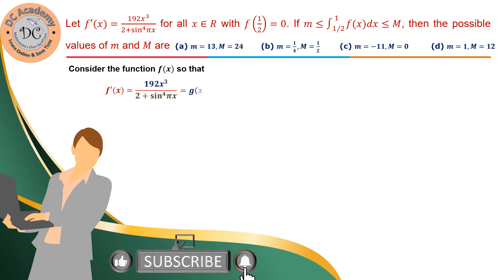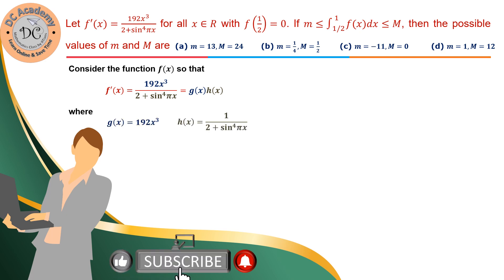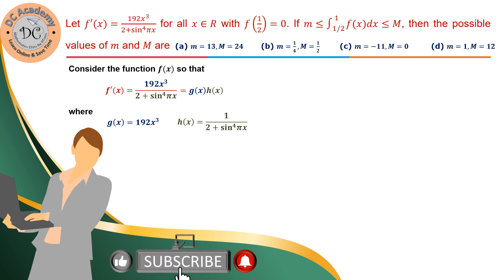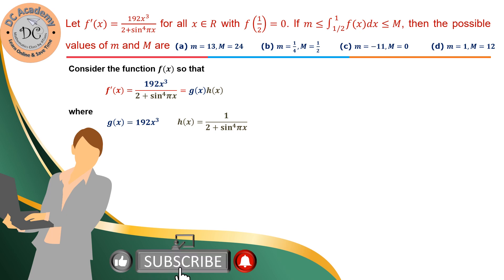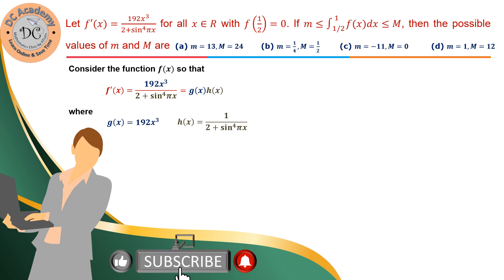We consider f'(x) = g(x)·h(x), where g(x) = 192x³ and h(x) = 1/(2 + sin⁴πx). We use the product form rather than the division form g(x)/h(x), because analyzing monotonicity with division can be confusing, whereas with a product it's much easier.